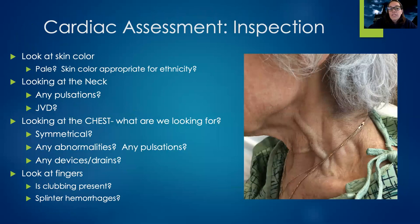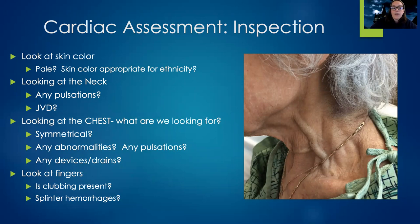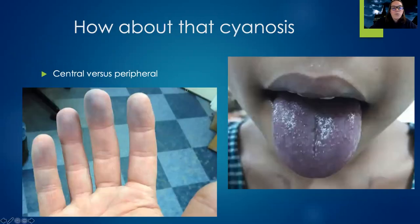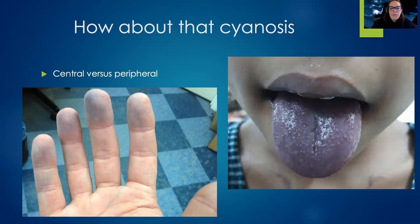We also want to inspect their skin. Pale skin can be a sign they're not getting good blood flow. Are there any pulsations in the neck — any JVD? A very dilated neck vessel, as seen in the picture, is usually a sign of heart failure or backup of fluid into blood vessels. Look at the chest: is it symmetrical? Are there any abnormalities, pulsations, drains, or devices related to the cardiac system? Look at the fingers for clubbing or splinter hemorrhages. Check for cyanosis — are the fingers the color they should be, warm and pink? Also look for central cyanosis, that blue color around the mouth.